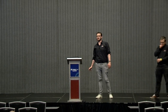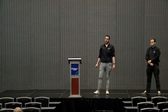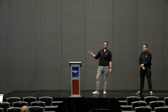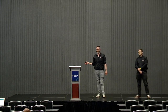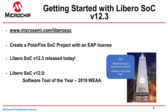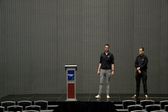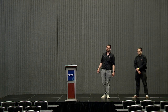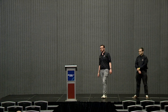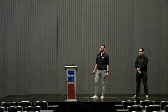Libero SoC version 12.3 — you can find more information and download a copy from microsemi.com/LiberoSoC. You can get started and create a PolarFire SoC project with one of our early access program licenses from today, as Libero SoC version 12.3 was released today. Just one thing to note: Libero version 12.0 recently won Software Tool of the Year at the 2019 World Electronic Achievement Awards.